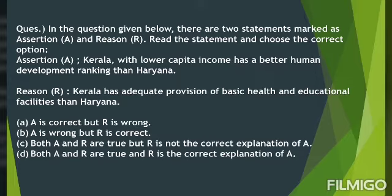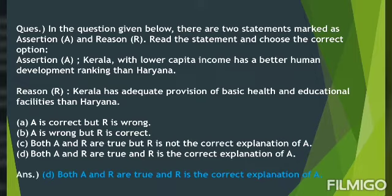Now the second step: is R the correct explanation of A? Yes — Kerala has better human development ranking because it has proper provision of facilities for education and health. So the answer requires that both A and R are true and R is the correct explanation of A. Option A says A is correct but R is wrong — incorrect. Option B says A is wrong but R is correct — incorrect. Option C says both are true but R is not the correct explanation — incorrect. Option D says both A and R are true and R is the correct explanation of A — this is the correct answer.